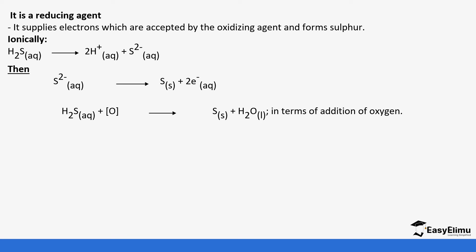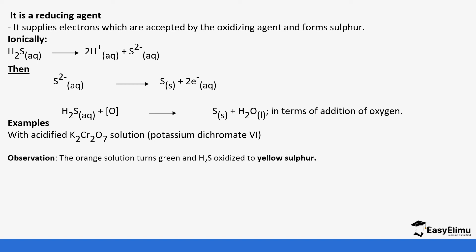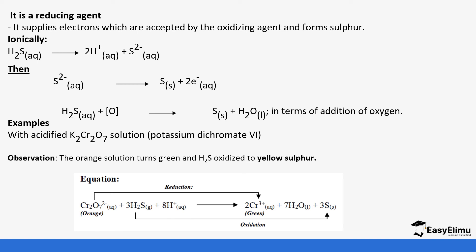For example, if hydrogen sulfide reacts with acidified potassium dichromate(VI) solution, which is orange in color, the orange color turns to green because hydrogen sulfide is oxidized to yellow sulfur. Potassium dichromate(VI) undergoes reduction to form chromium(III) ions, and hydrogen sulfide is oxidized to sulfur. When a substance undergoes reduction it is the oxidizing agent, so potassium dichromate(VI) is the oxidizing agent, and hydrogen sulfide is the reducing agent.